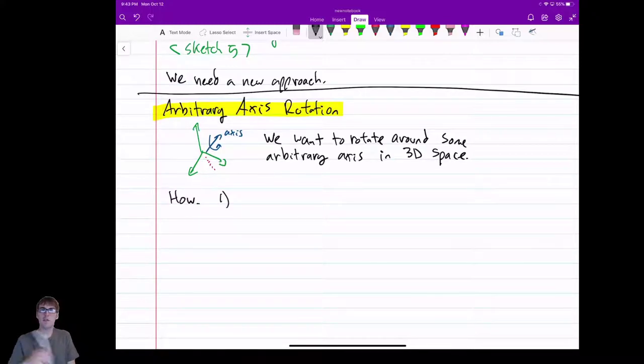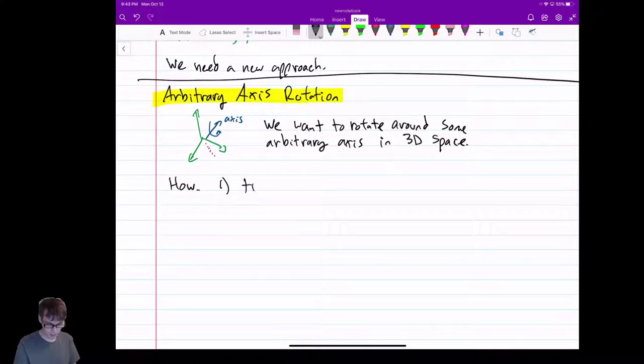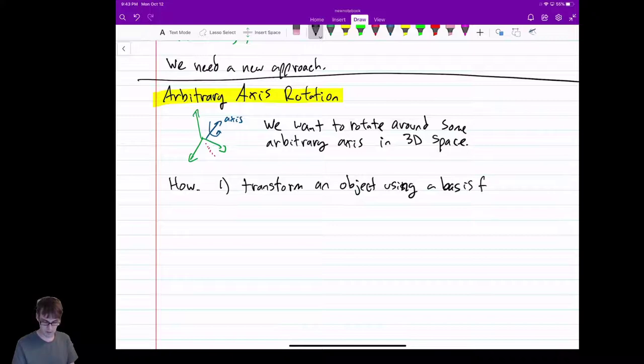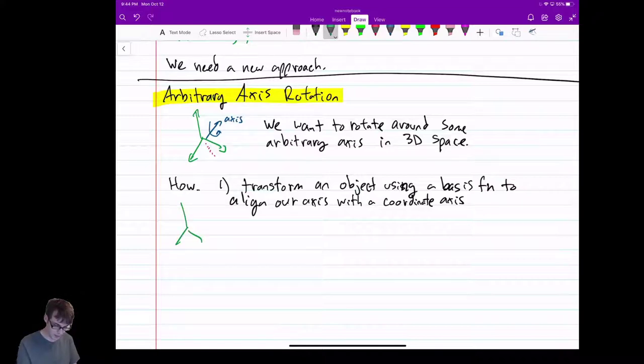The simple way to do it is we leverage a technique we've already seen with rotation. If I want to rotate something out here, I move it in here, I rotate it, and I move it back. We can do something similar for rotations. So one is we can transform an object using a basis to align our axis with one of the coordinate axes.